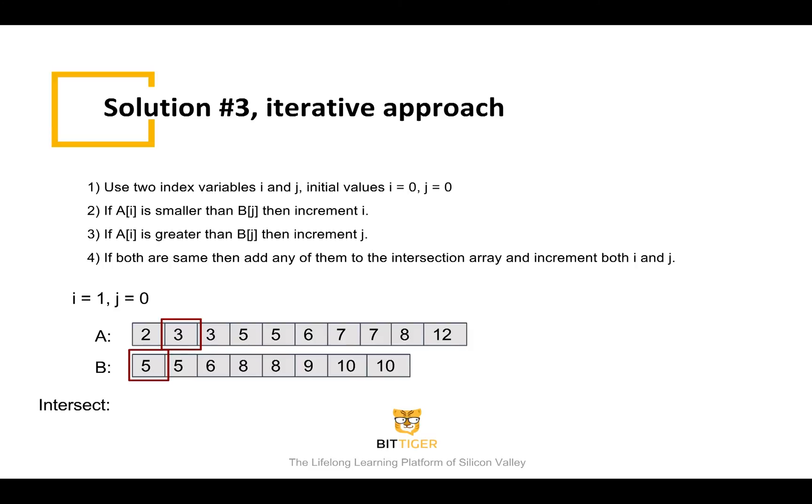Now i is equal to one, and j is equal to zero. A of i is equal to three, and B of j is equal to five. Since three is smaller than five, we need to increment i to two.